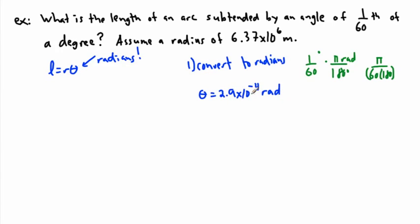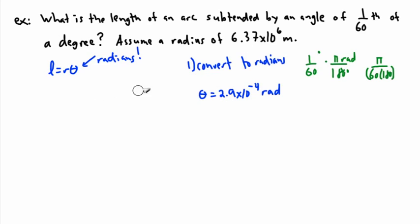A lot of people, when they look at this, think they've done something wrong because it doesn't look like degrees. But you're right, it's not — it's in radians. And it is really small, because think about it: it's 1/60th of a degree. You'd have to take a circle, split it into 360 even pieces, take one of those pieces and split it into 60 slices. Of course it's going to be a really small amount.